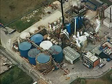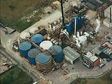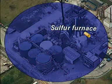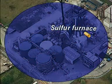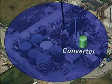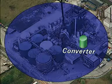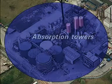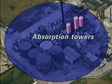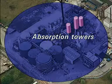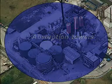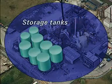At this small plant that makes 600 tonnes of acid per day, the sulphur is burnt in a furnace. Sulphur dioxide passes to the converter. Sulphur trioxide is fed to the absorption towers to produce acid of the required concentration, which is then stored for delivery by tanker.